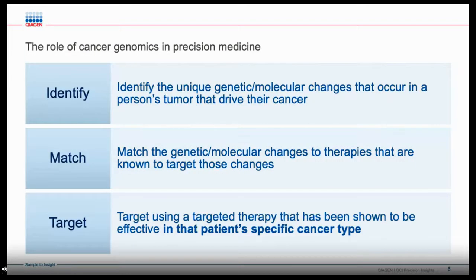These are the cases where identification of the variant alone is not sufficient to support a clinical decision. The physician needs to know whether that specific variant is likely to predict sensitivity to a therapy, what is the evidence that the variant is actionable, what is the evidence to support the use of the therapy in that disease type, and what clinical trials are available that the patient could access. With the advent of comprehensive cancer panels, the number of variants to assess is even larger than it has been in the past.